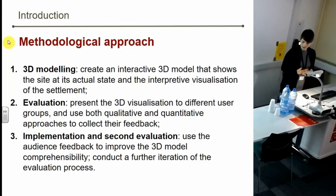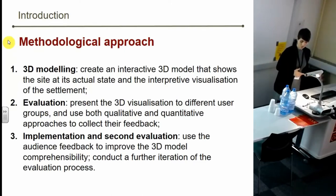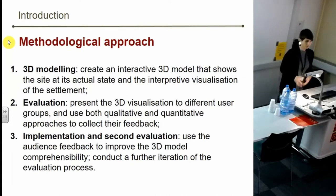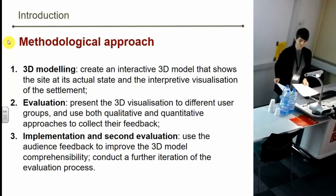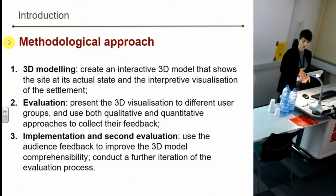The methodology is defined by different stages along the following workflow. Stage 1: 3D modeling — create an interactive 3D model that shows the site in its current state and the interpretive visualization of the settlement. Stage 2: Evaluation — present the 3D visualization to different user groups and use both qualitative and quantitative approaches to collect their feedback. Stage 3: Implementation and re-evaluation — use the audience feedback to improve the 3D model's comprehensibility and establish an effective workflow that can be potentially applied to other case studies, then conduct a further iteration of the evaluation process.